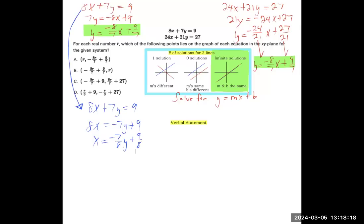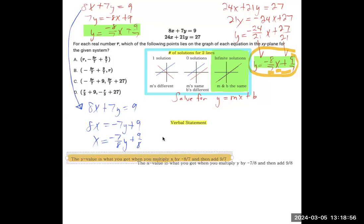And now in this question type that we're talking about, what you need to do is have a verbal statement for each of these. So what we mean is, for the y equals situation, which is either one of these right here, that can be stated as the y value is what you get when you multiply x by negative 8 over 7, and then add 9 over 7 to that. So once again, we're taking that equation that we had there and we're just verbally stating that the y value is what you get when you multiply x by negative 8 over 7, and then add 9 over 7 to that.